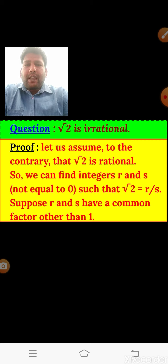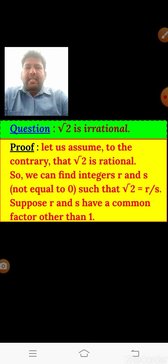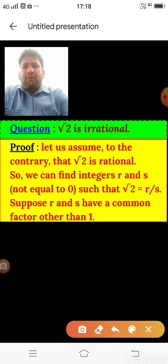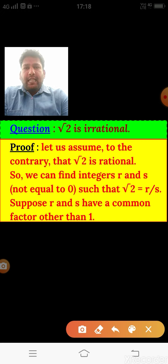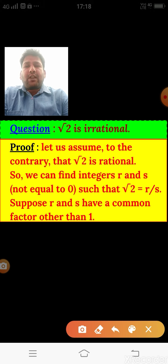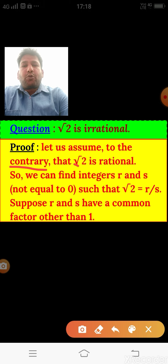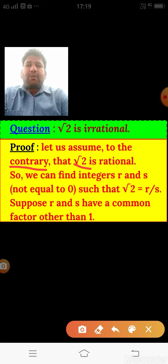Now we take the first question from the NCERT book — Theorem 1.4: we have to show that √2 is irrational. To prove this, we take a contradiction. We assume √2 is a rational value. If it is rational, then it can be written in the form p/q where the denominator is not zero.